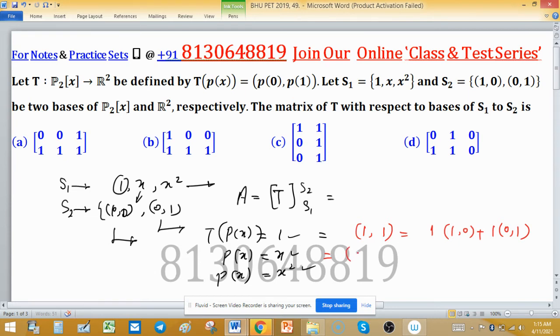This is 1·(1,0) + 1·(0,1). For T(x), T will send this as P(0) = 0 and P(1) = 1 because of the identity polynomial.